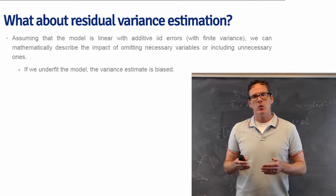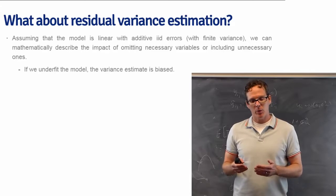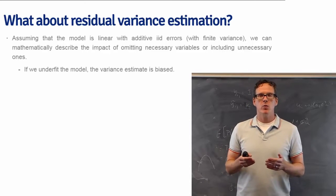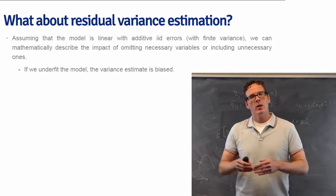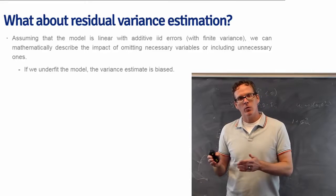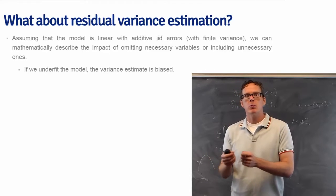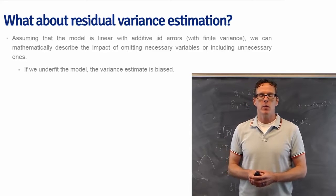If we underfit the model, in other words we omit important variables, then the variance estimate is biased. Why is that? Because we've attributed to variation things that are actually systematically explained by these covariates that we've omitted.